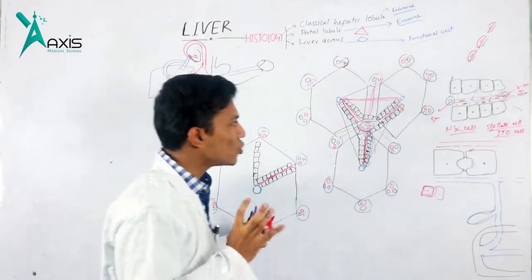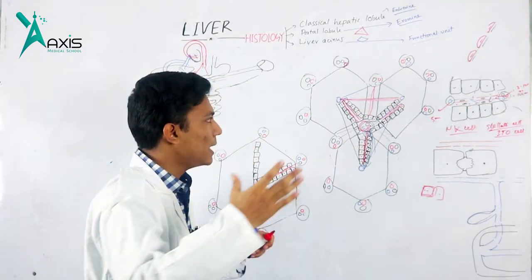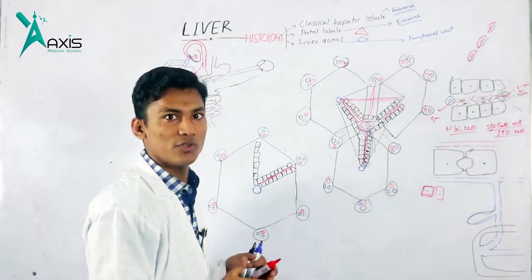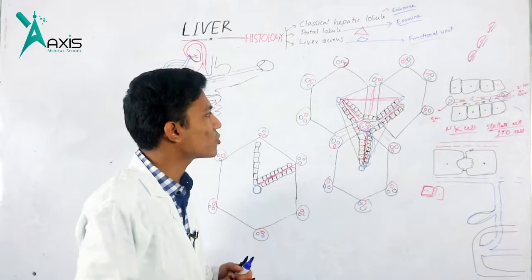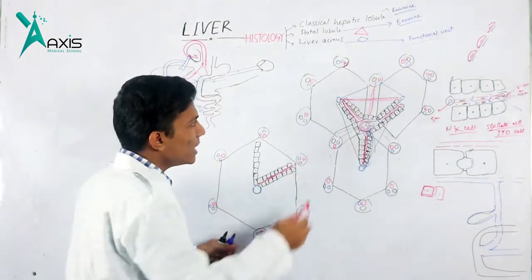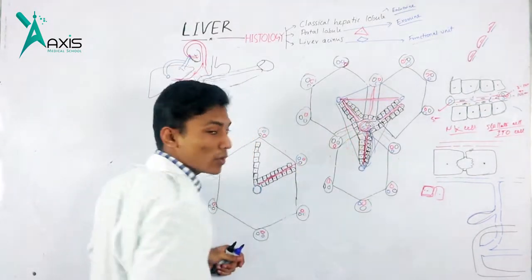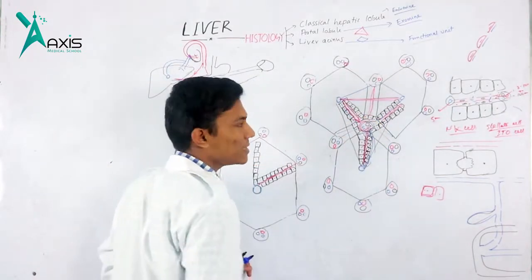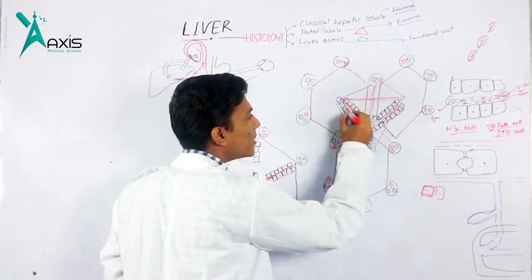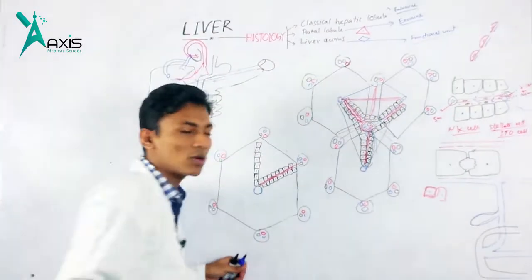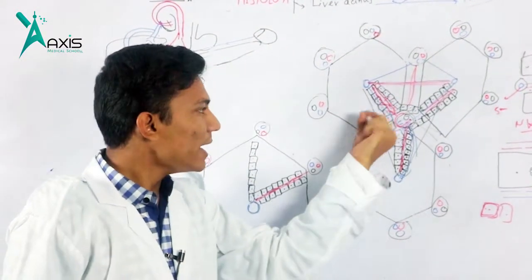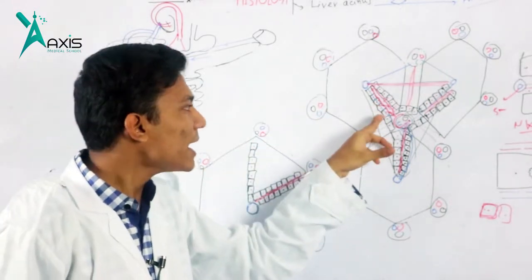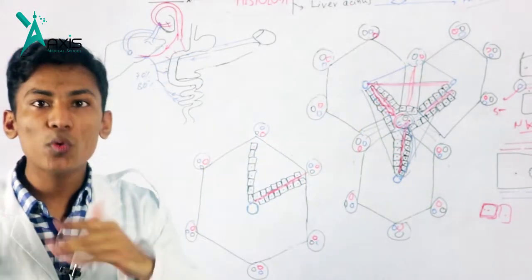What is important is that blood flows from the center to the periphery. Oxygenated blood and nutrition-filled blood flow from the center to the periphery. So the hepatic cells closest to the portal triad receive the most oxygenated and nutrition-rich blood, while cells at the periphery receive blood with less oxygen and nutrition.